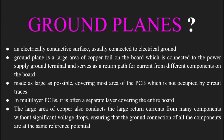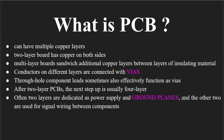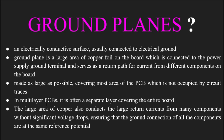In multi-layer PCBs — that is, boards with more than two layers — the ground plane is often a separate layer covering the entire board. As discussed earlier with the four-layer PCB, two layers are dedicated to power supply and ground planes, and the other two are dedicated to signal wiring between components. Additionally, the large area of copper conducts large return currents from many components on the PCB without significant voltage drops, ensuring that the ground connections of all components are at the same reference potential, so there is no voltage difference between any two points on the same plane — preventing leakage current.